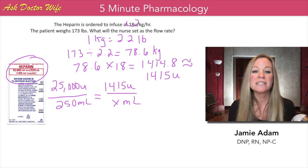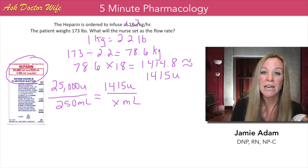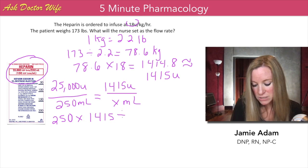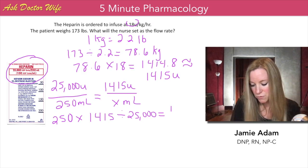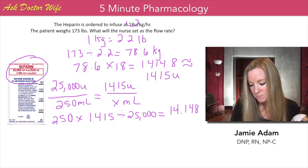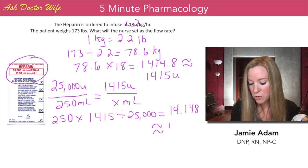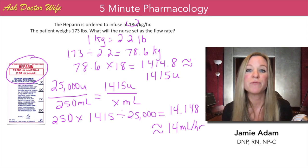We can cross multiply and divide. We're going to cross multiply the values we have: 250 times 1,415, then divide by the other number, 25,000, which gives us 14.148. Because we can't set the pump to 14.148, we have to round to the nearest milliliter. So the flow rate we set on the pump is 14 milliliters per hour.